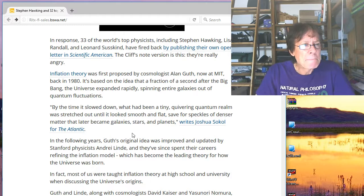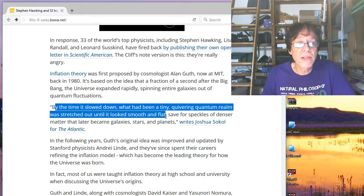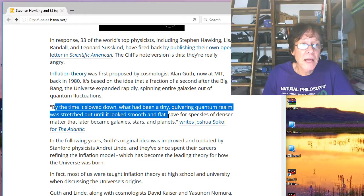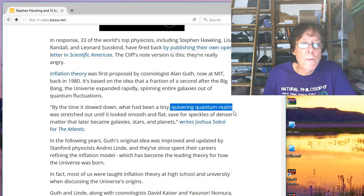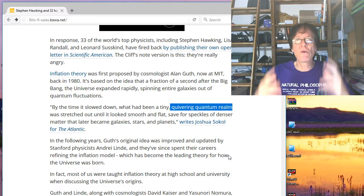Anyways, by the time it slowed down, what had been a tiny quivering quantum realm was stretched out into a smooth and flat—it looked smooth and flat, save for specks of denser matter that later became galaxies, stars and planets. Very quivering—they call this—this is what I like—here we go—quivering quantum realm. This is the lingo of modern physics. It's vacuous. It's a bunch of fantasy.